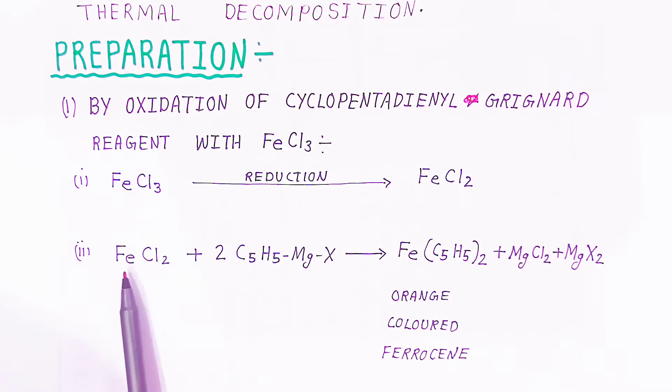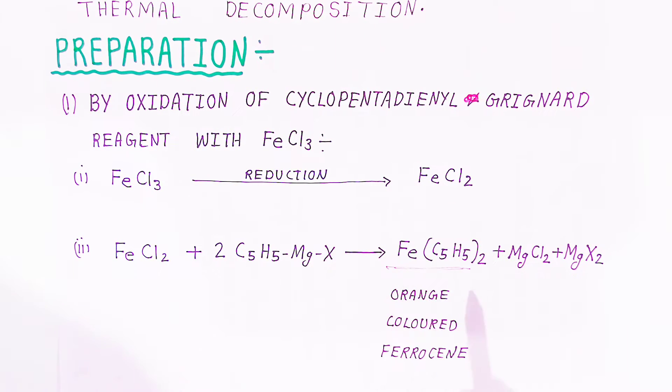When this reacts with FeCl2, it will form orange color ferrocene. You are getting byproduct magnesium chloride and magnesium halide. This is the first preparation - how you are going to prepare ferrocene.